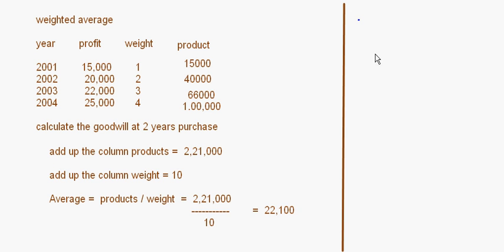Once you have the weighted average, calculate goodwill the same way as before. Goodwill = 22,100 × 2 years purchase = rupees 44,200. If abnormal profits or losses are present in a weighted average question, adjust them first, then use the adjusted profit × weight as the product. With that, we conclude the topic of valuation of goodwill using the average profits method. Thank you.